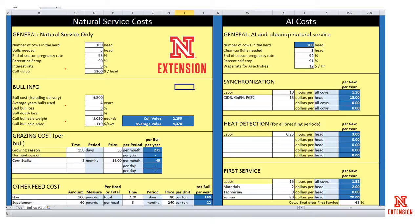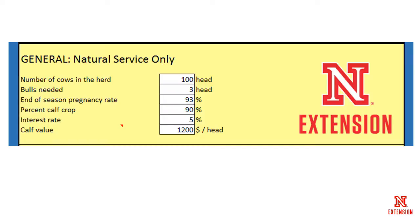The natural service cost allows us to calculate what it would cost to breed the cows utilizing natural service, and then we have the option of comparing that to a cost utilizing AI, and then we can compare the two options to one another. The first segment we need to fill in under Natural Service Only is the number of cows in the herd — for this example we assumed 100 — the number of bulls we're going to need, end of season pregnancy rate, and percent calf crop.